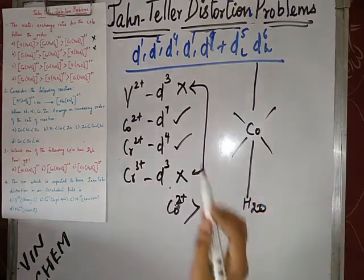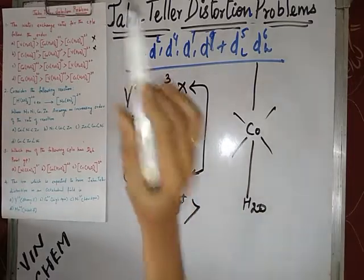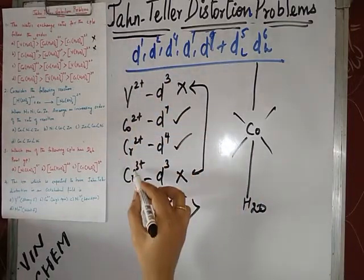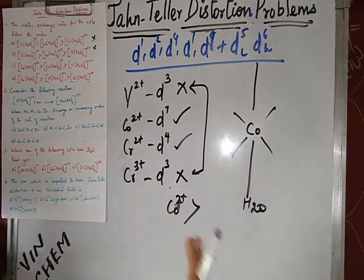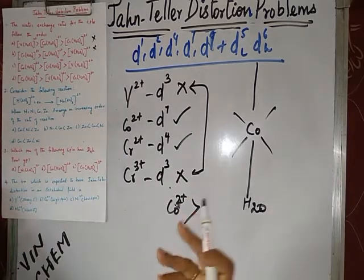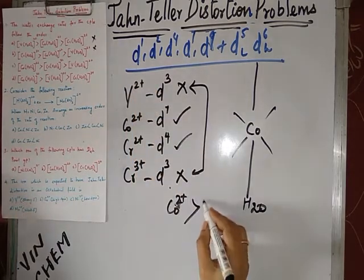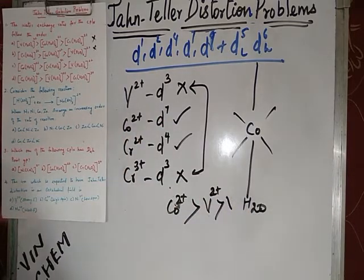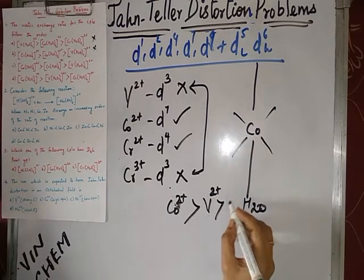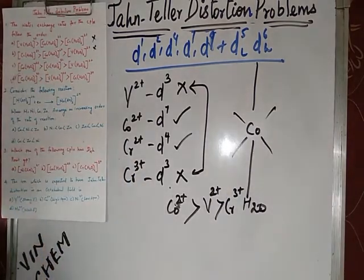Now we compare chromium 3+ and vanadium 2+. Both are d3 — no Jahn-Teller distortion. However, when the oxidation state increases, the metal ion pulls the ligand closer, meaning the force of attraction is greater and it is more difficult to exchange the ligand. So vanadium 2+, having a lesser oxidation state, will exchange ligands more easily than chromium 3+. Therefore the correct order puts chromium 3+ last — the last option is correct.